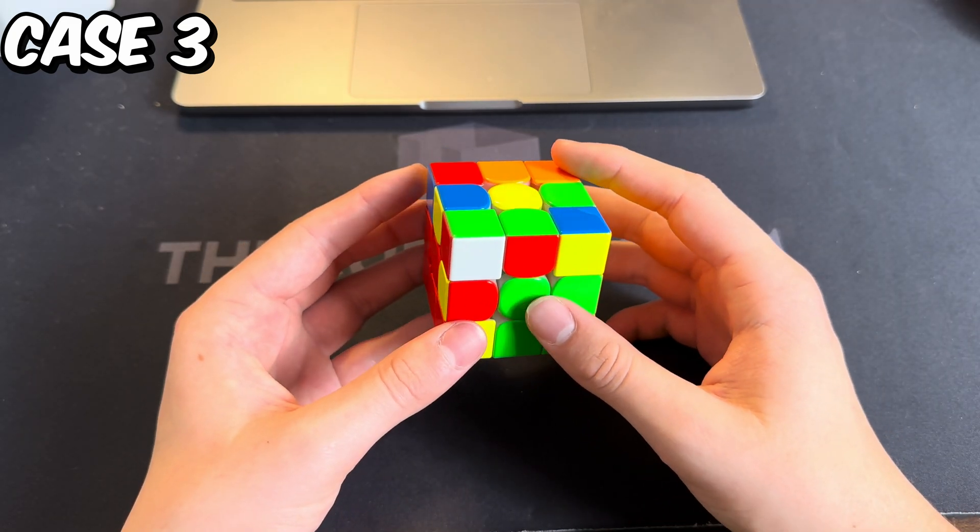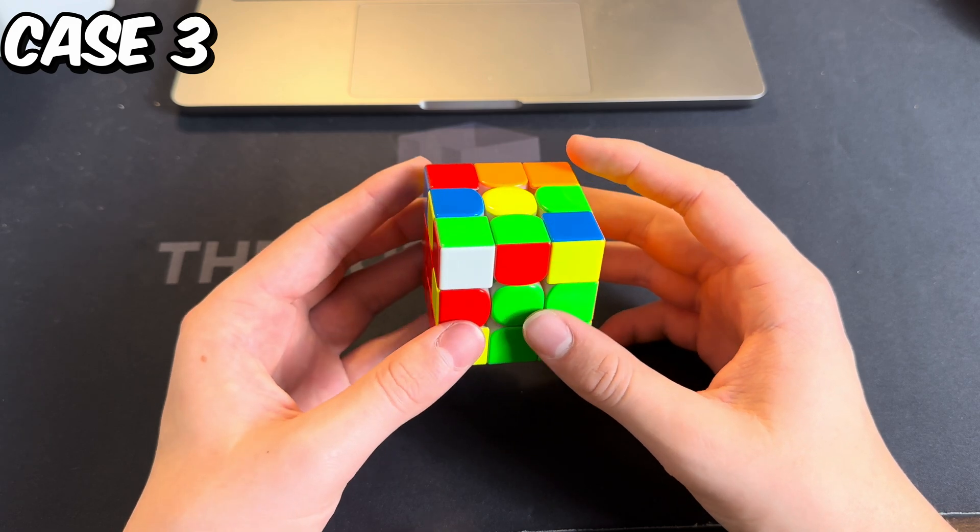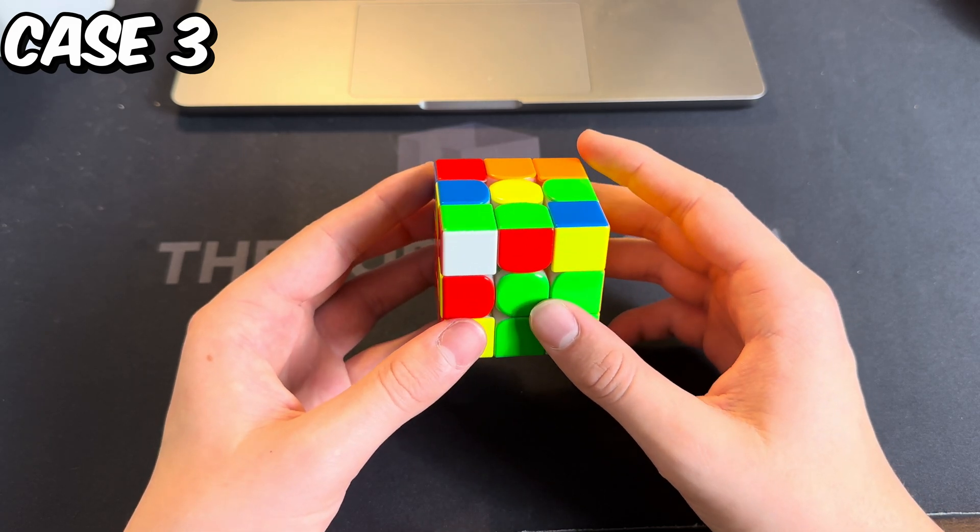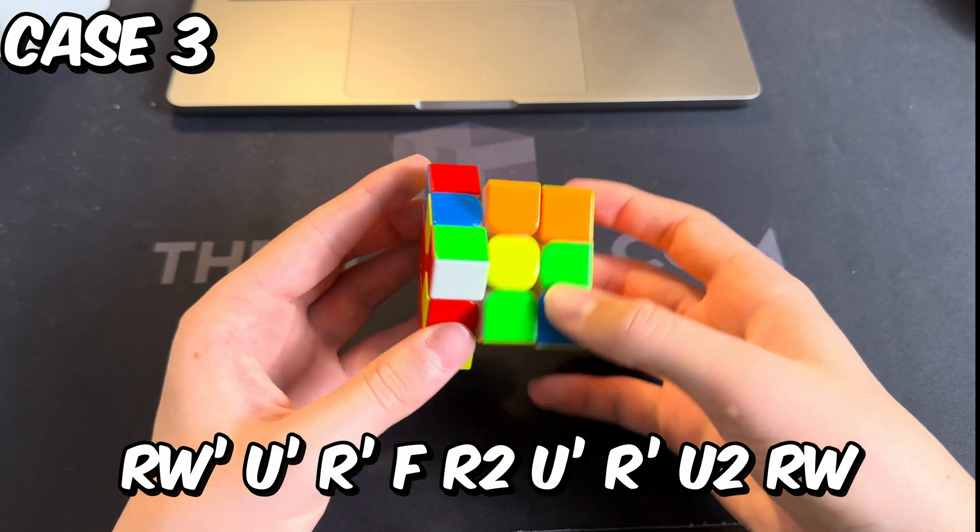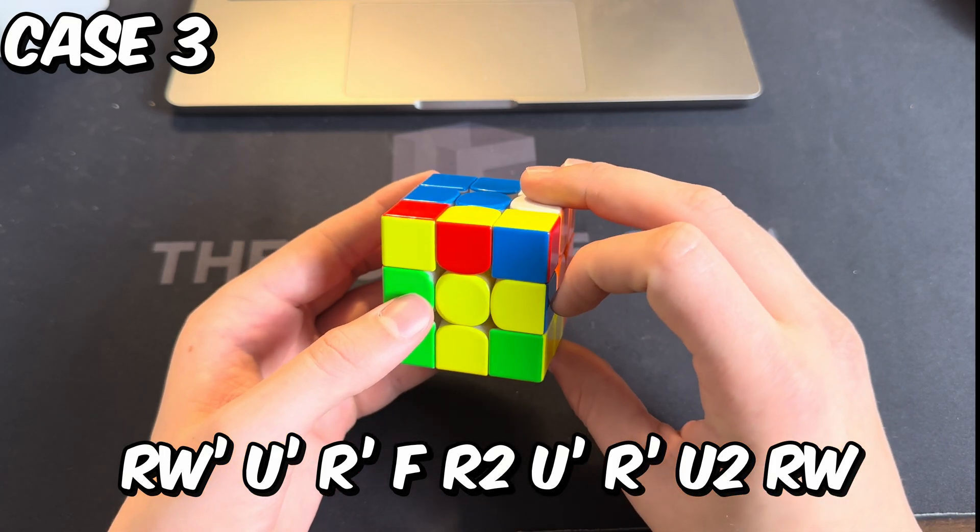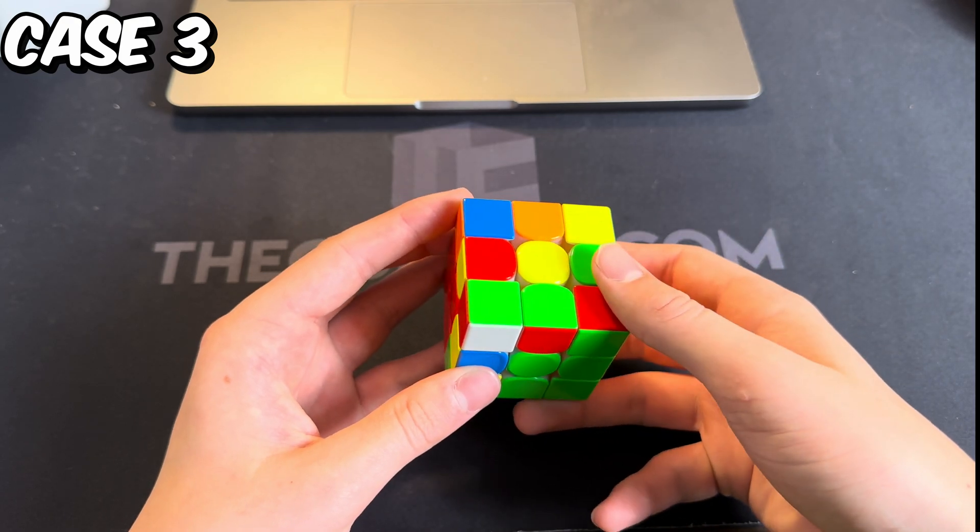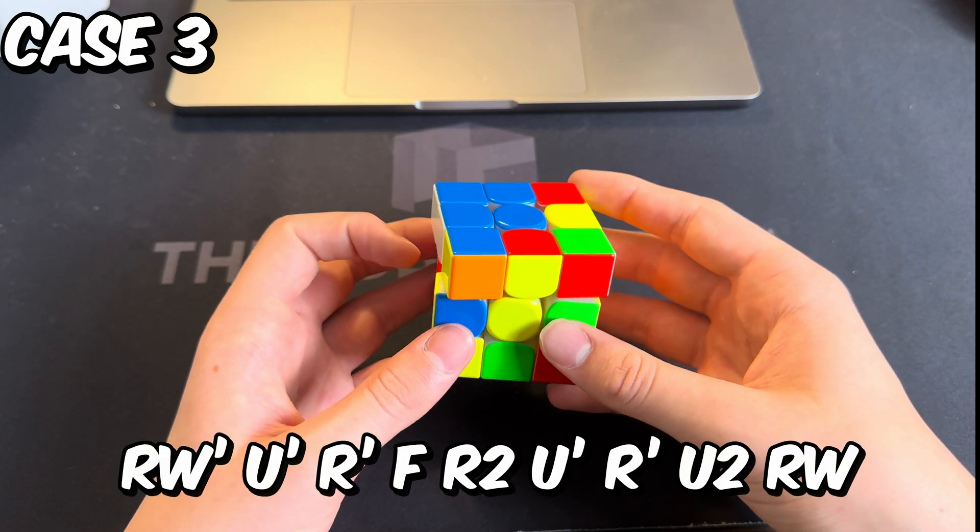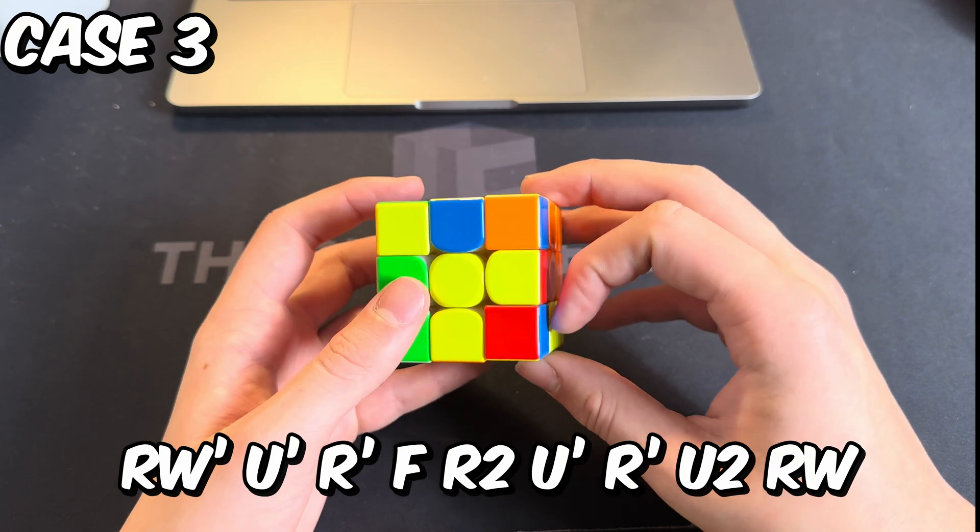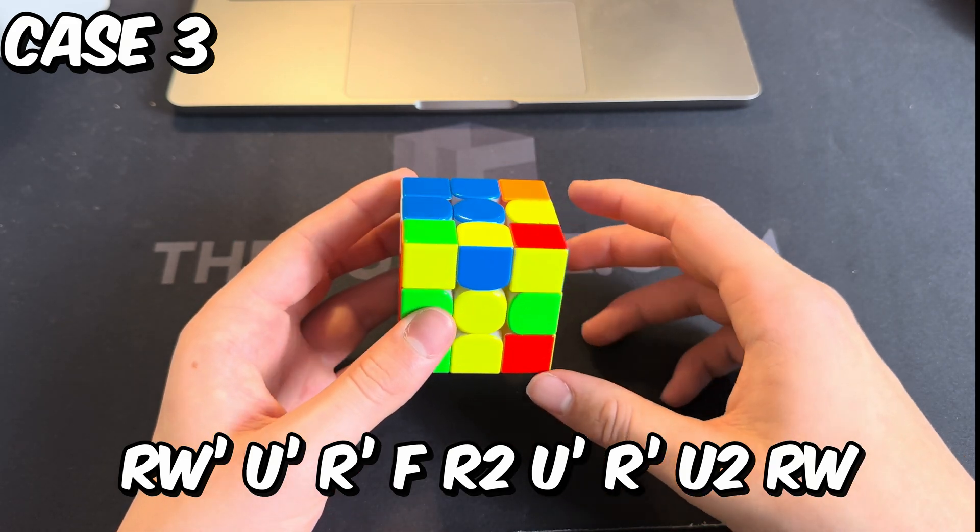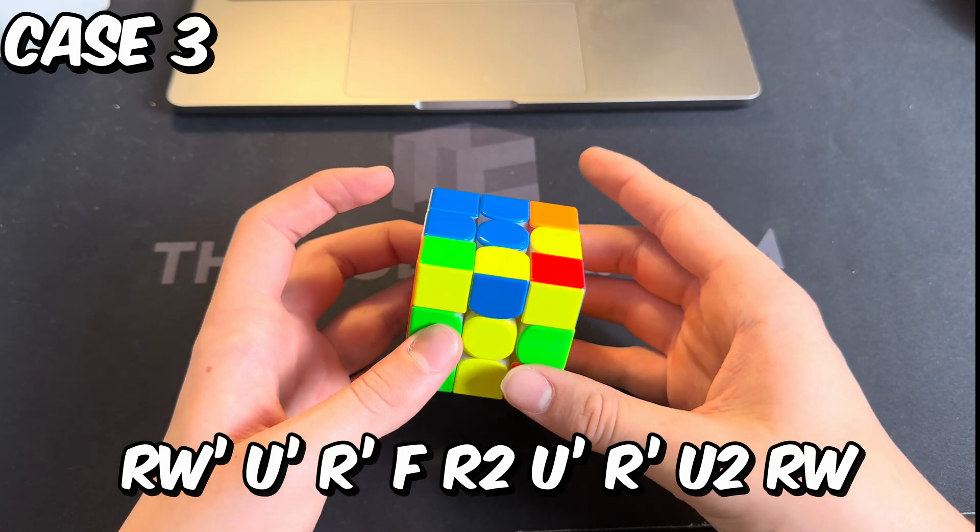When I'm solving on the left, I don't really like this algorithm with all the wide L moves, so here's an alternative. You just pair up this pair by doing a wide R prime, then U, put the corner into the bottom, and solve this last piece by inserting it with the U2.